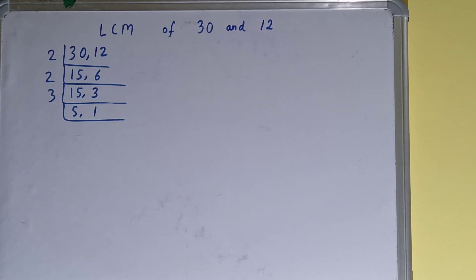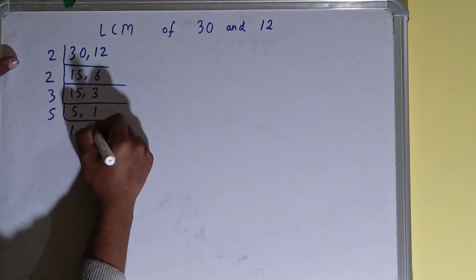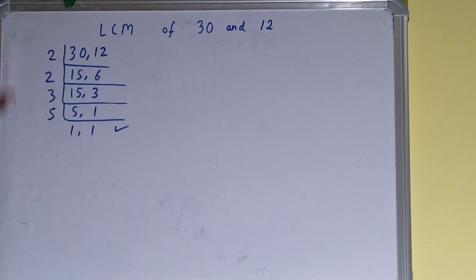Now if we check, is any of the numbers divisible by 3? Then none of the numbers. So we'll go to the next prime number, that is 5. This first number can be divided by 5, so we'll divide and we'll get 1 comma 1. Once we get that, we need to stop.